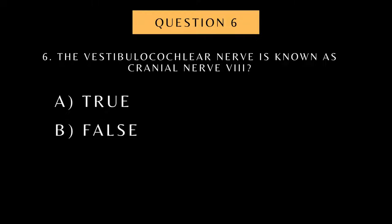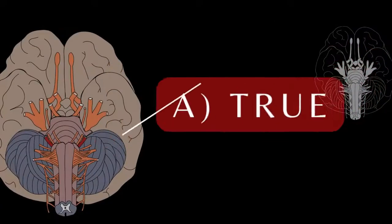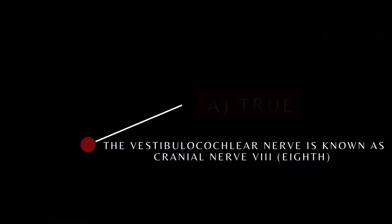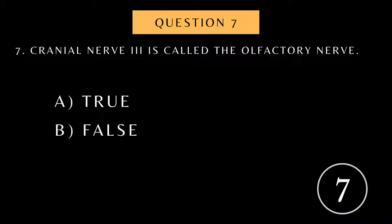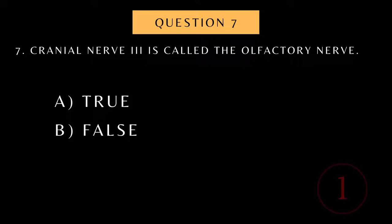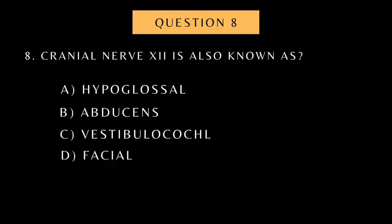The vestibulocochlear nerve is known as Cranial Nerve 8. Cranial Nerve 9. Cranial Nerve 6 is called the Olfactory Nerve. Cranial Nerve 10 is called the Olfactory Nerve.